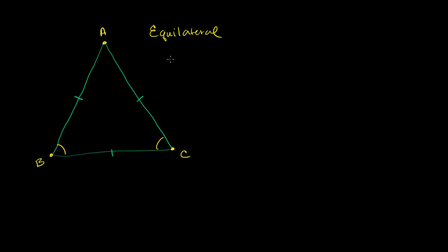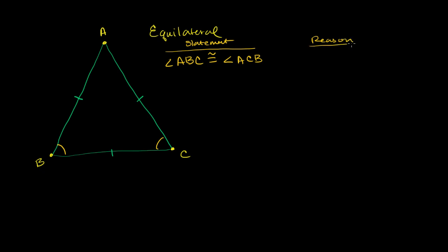So let me write this down. We know angle ABC is congruent to angle ACB. That's the statement. And the reason here is that they're base angles of an isosceles — because we know that this side is equal to that side. The fact that these two legs are equal shows that the base angles are equal. Two legs equal imply base angles are going to be equal.